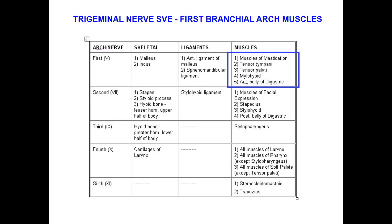The trigeminal nerve supplies the first branchial arch muscles. This is noted during development of the child — it is not very important for you in this context.